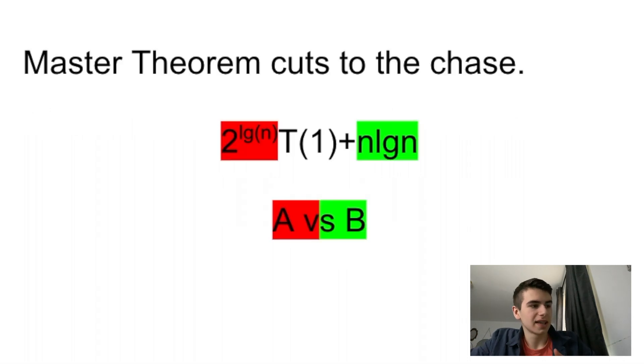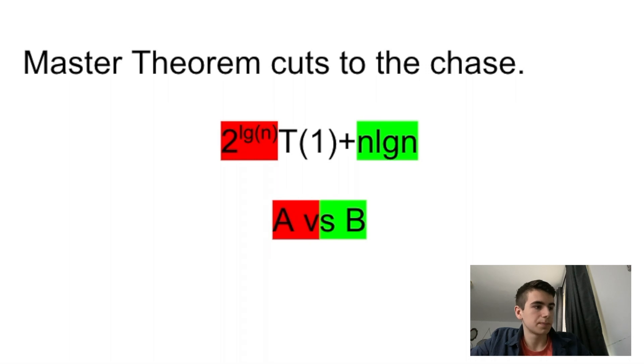So what master theorem says, if we have a recurrence relation in this form, aT(n/b) + f(n), is that our big A is going to be n^(log_b(a)). And big B is going to be f(n) * log_b(n).